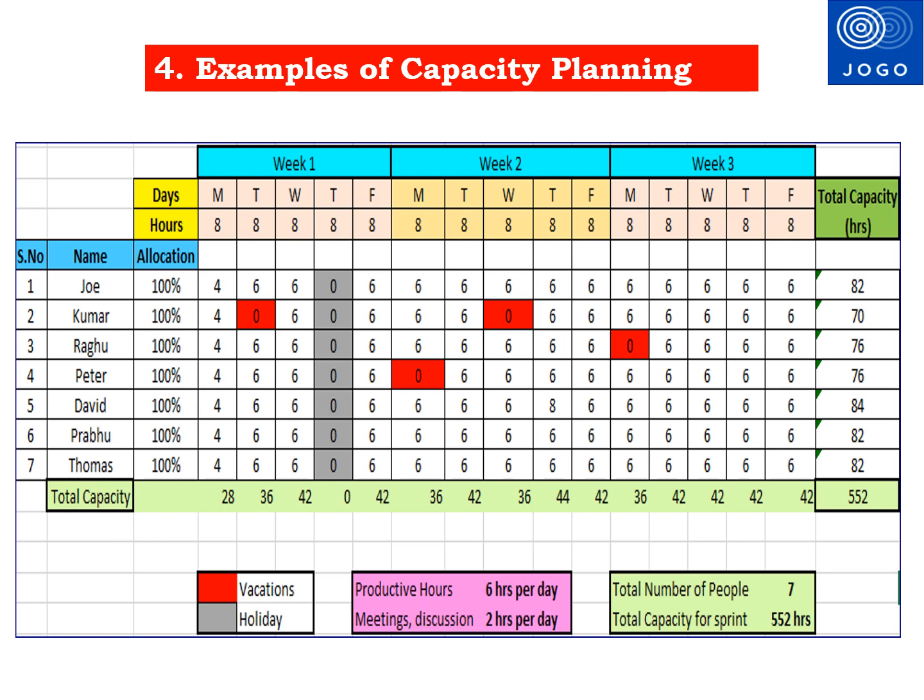The capacity of each team member is shown in the last column on the right side. For Joe, it's 82 hours; for Kumar, it's 70 hours, etc. This represents each individual team member's capacity for the 3-week sprint. The total team capacity is calculated by adding all team members' capacities. As per this example, the total capacity for the team is 552 hours.